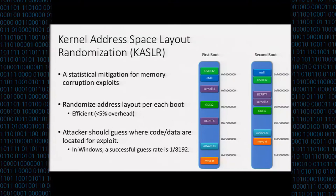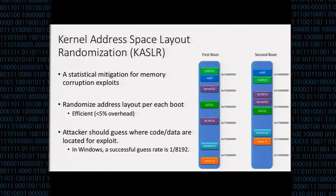Let's start with what is kernel ASLR. Kernel ASLR is a statistical mitigation for memory corruption exploits, such as exploiting buffer overflow or use-after-free. The mechanism is very simple: it randomizes addresses on each boot or per each load of a kernel module or driver. Because it is very simple, it is very efficient — the overhead is less than around 5% runtime overhead, so it is applied to most commodity operating systems today.